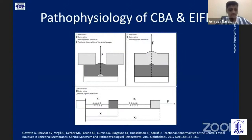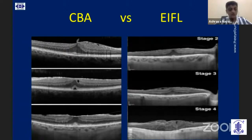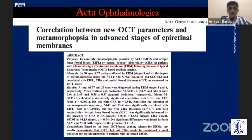Govetter et al in 2017 published two entities: central bokeh abnormalities and ectopic inner foveal layers. The simplified model explains the pathophysiology of these entities when the total force F is exerted by the epiretinal membrane onto all the layers of the retina. The stage three and stage four ERMs have overlapping features, which is obvious because they are consequences of the same pathophysiology. This confusion ends with a paper published by Alkebes et al in 2020, which demonstrates EIFL to be a better indicator for metamorphopsia in ERMs, making CBA redundant.